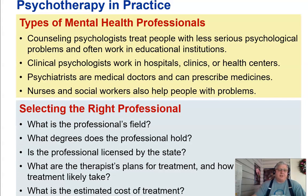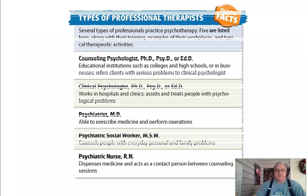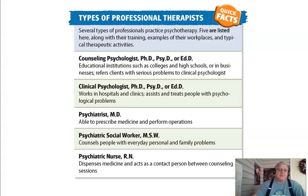When selecting the right professional, consider: What is the professional's field? What degree does the professional hold? Is the professional licensed by the state? What is the therapist's treatment plan and how long will treatment likely take? What is the estimated cost? There are several types of professionals who practice psychotherapy — five are listed here, along with their training, examples of their workplaces, and typical therapeutic practices.